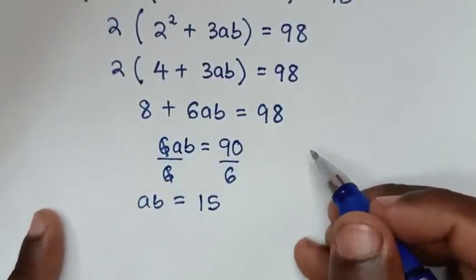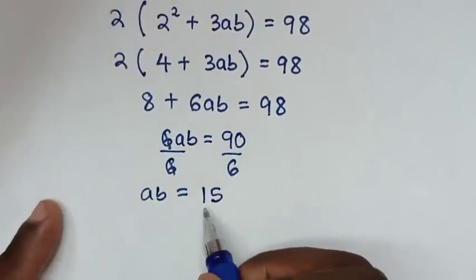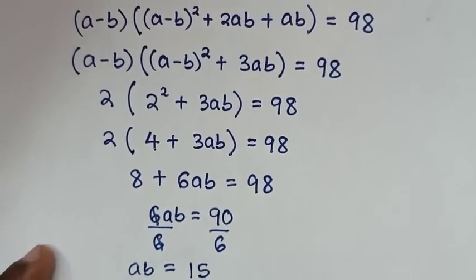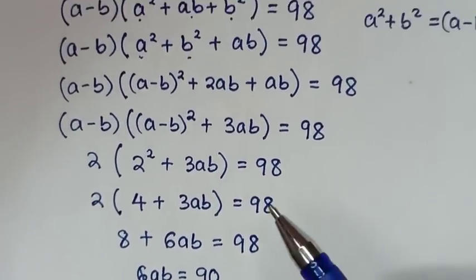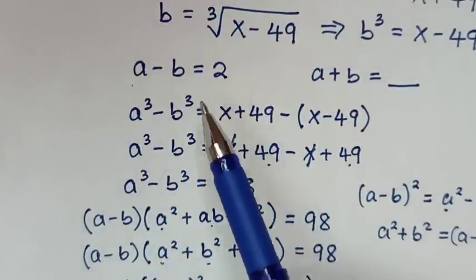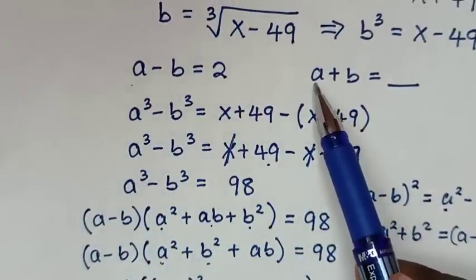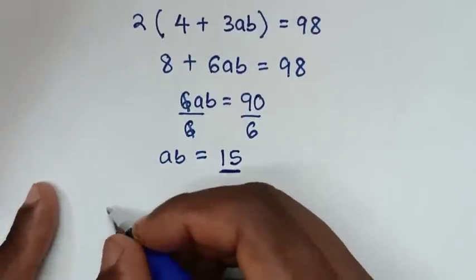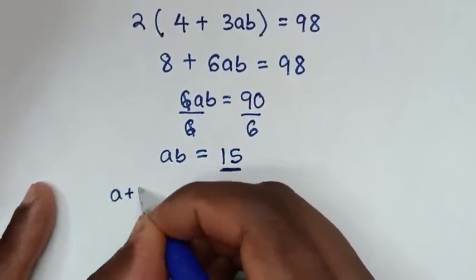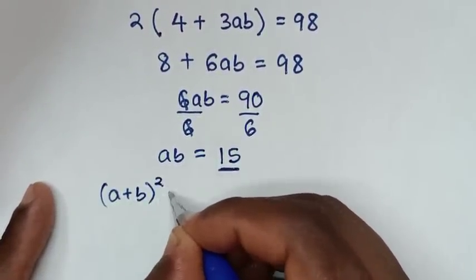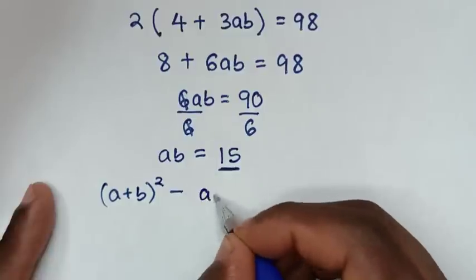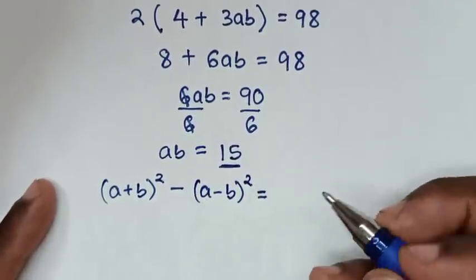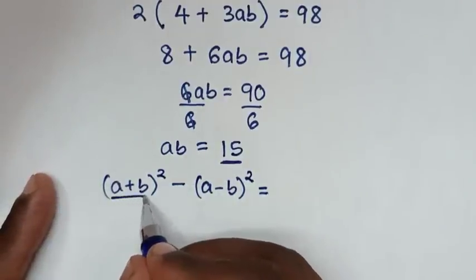Now from the value of ab = 15 and a - b = 2, we will find the value of a + b. We apply the identity: (a + b)² - (a - b)² = 4ab.